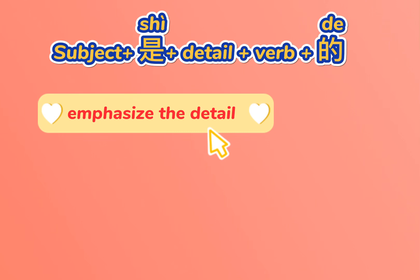The structure is: subject plus 是 plus detail, then plus verb, then 的. Don't forget the verb is always before 的.